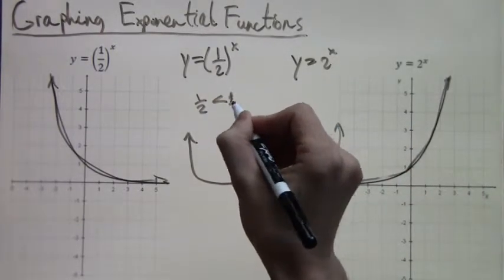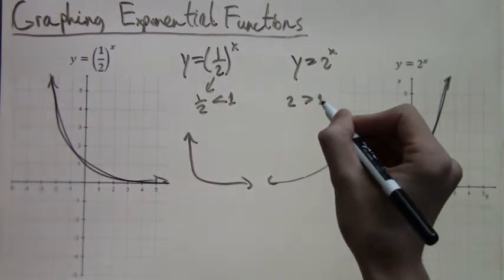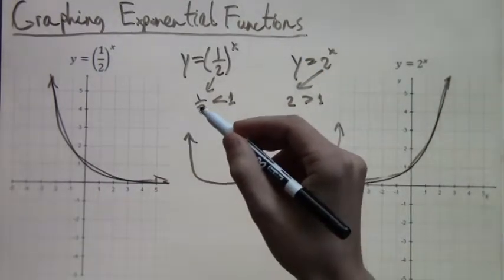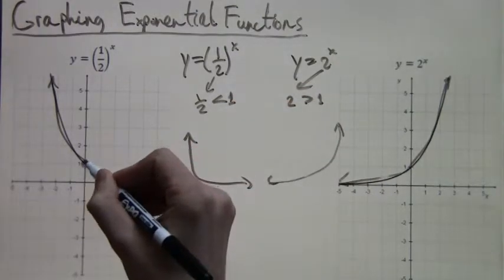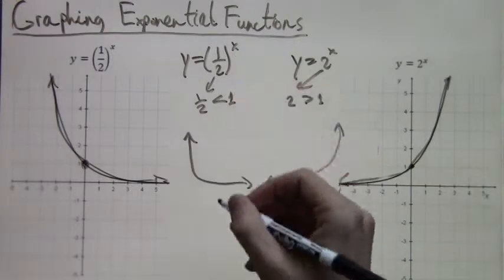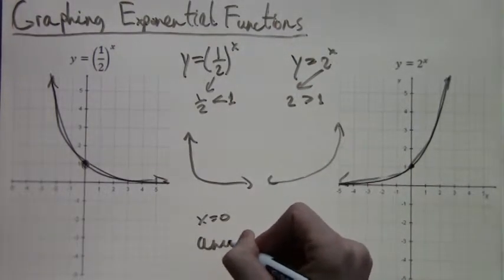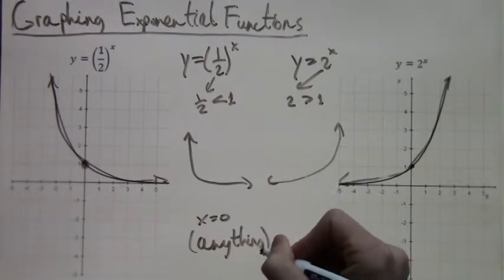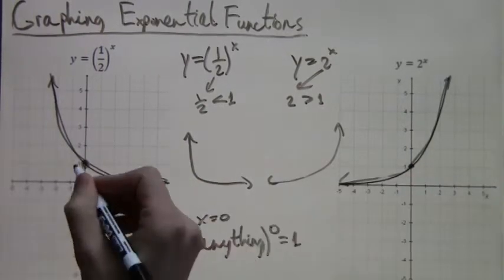The reason for this is that one of them has one half to the x, and one half is less than one. The other has two to the x, and two is greater than one. So this overall shape is determined by what number you have that you're taking to the xth power. If the number is smaller than one to the x, like one half to the x, it'll slope down. Otherwise, if you have for example two or three or four, any number greater than one to the x, it'll slope up.